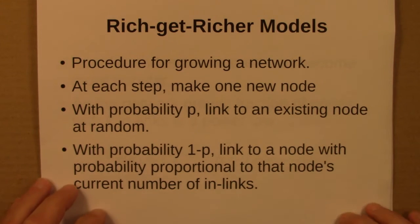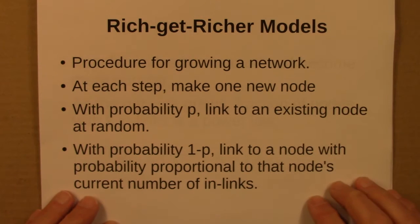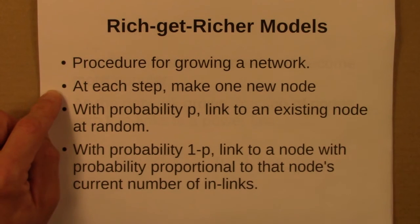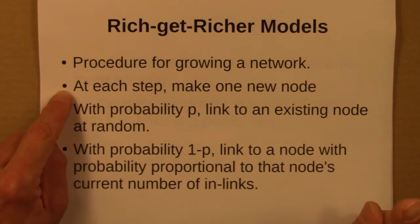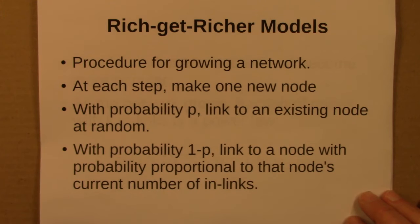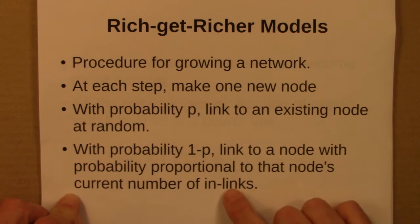The first model is a version of a rich-get-richer model, which we can think of as a procedure for growing a network. At each step, we have an existing network and we make one new node. With probability p, we link to an existing node at random, but with probability 1-p, we link to a node with a probability proportional to that node's current number of in-links.